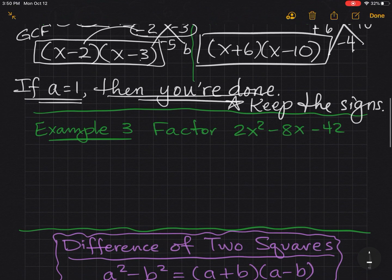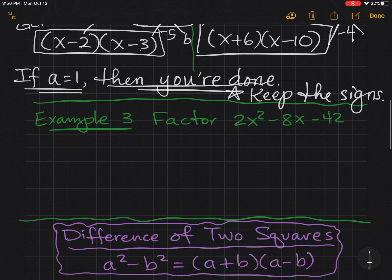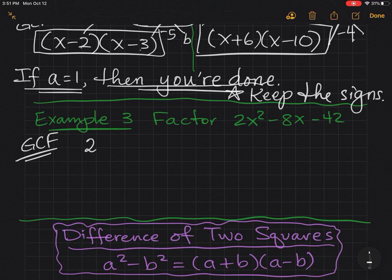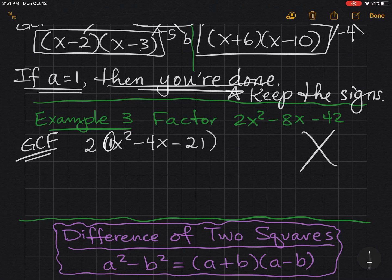Let's try one more example with three terms. A is not 1. Oh, wait a minute. Got to factor out the GCF first. That's always your first step. So I'm going to factor 2 out. And that leaves me with x squared minus 4x minus 21. And now a is 1. A is 1 because there's no number there in front.